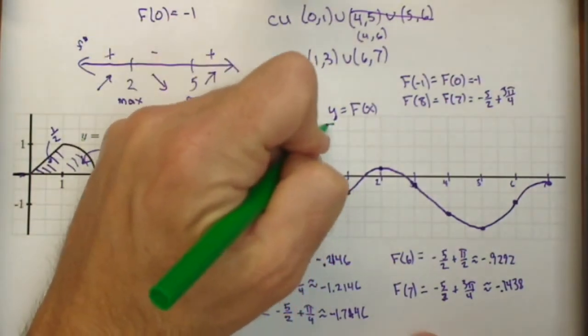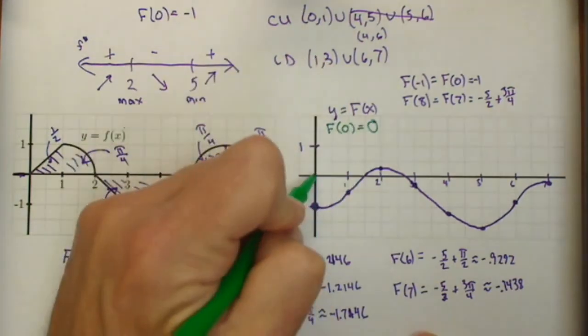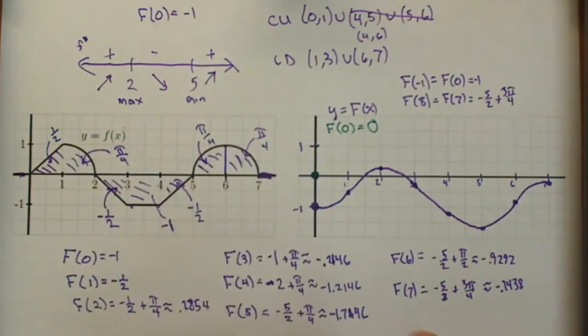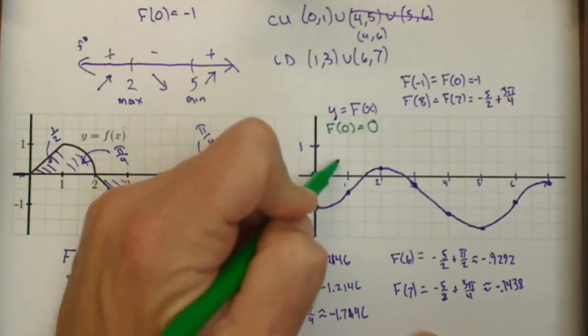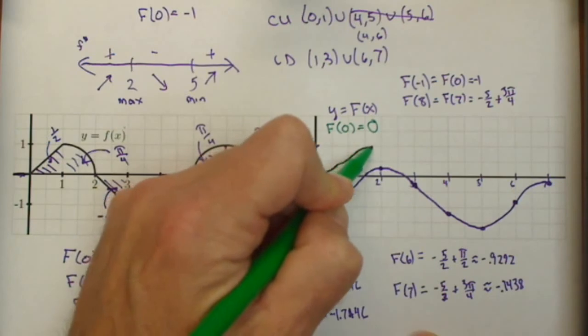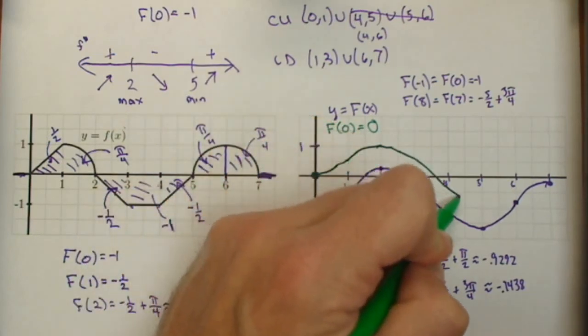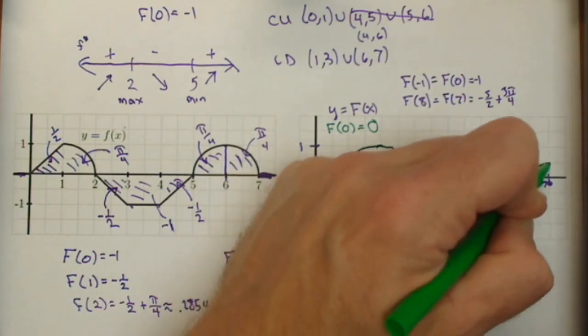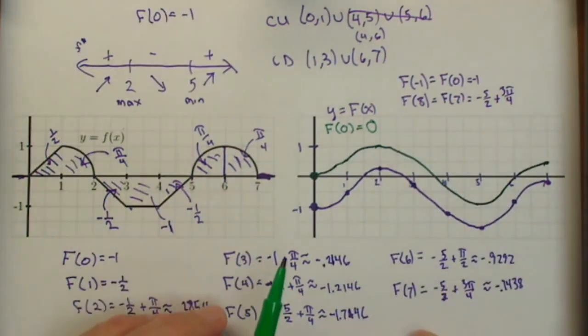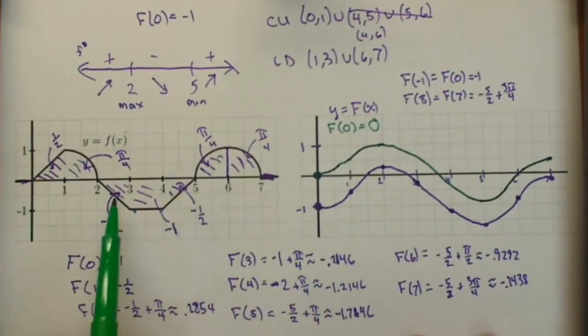If we wanted to change that, say f of 0 equals 0, that would move this point to here. But all our changes stay the same. So what we would get is almost the same graph, just shifted up one unit. So changing our initial condition is going to vertically shift our graph up and down in this particular case. Because all the changes are still the same.